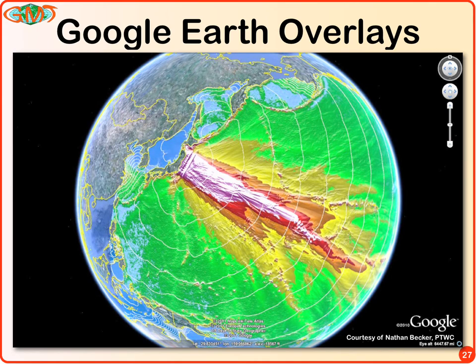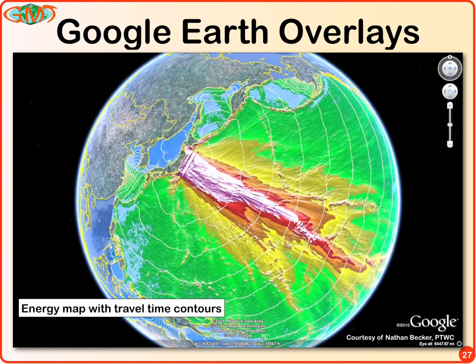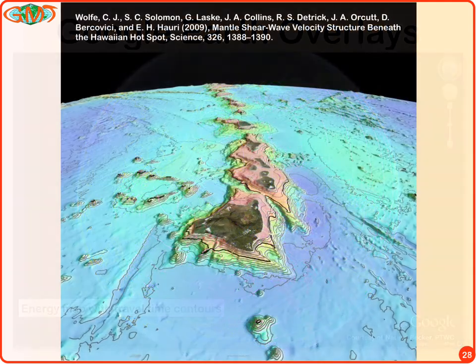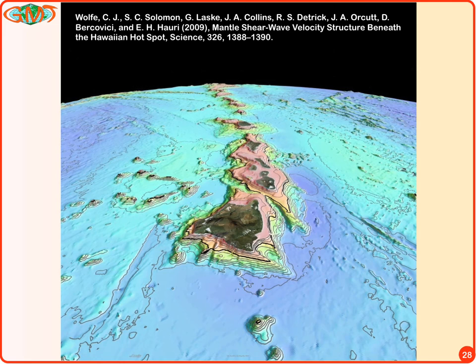This Google Earth screenshot, provided by Nathan Becker from PTWC, shows a GMT plot of the kinetic energy of the wave caused by the Japan earthquake, superimposed with travel time contours. This allows PTWC to examine the data from different angles and share it with civil defense and media to explain what's happening and how things are spreading. This was the cover of Science Magazine in 2009, featuring Cecil Wolf's work on tomography and the Hawaiian plume. The frontpiece was generated by taking the Smith-Sandwell bathymetry, plotting it in GMT tiles as KML files, loading it into Google Earth, and adjusting the viewing position — the image clamping to the seafloor gives a 3D effect.